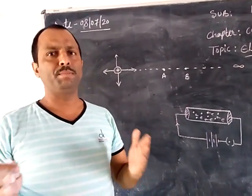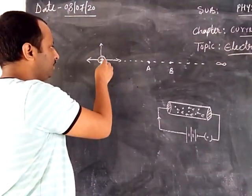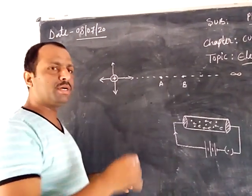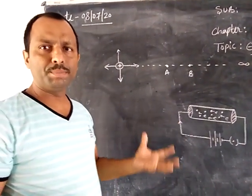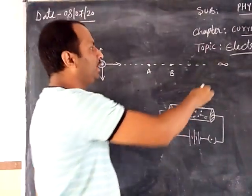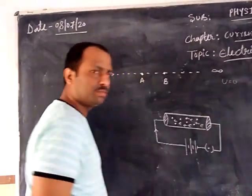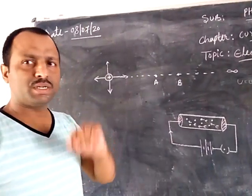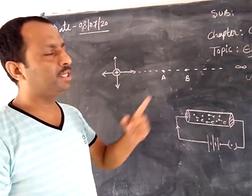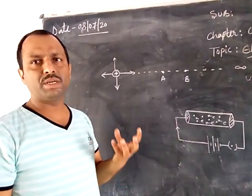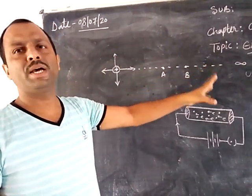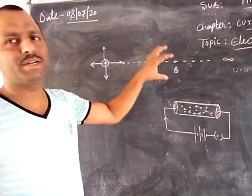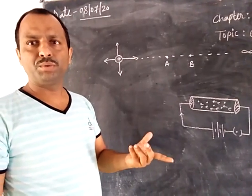In the previous concept we learned that whenever a charge is kept, an electric field is set up. If we place another charge at a different point, we use a test charge — it has a very low charge value so it will only experience the electrical effect and will not produce its own electric field.